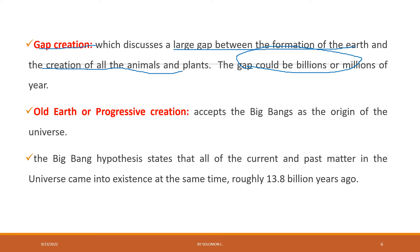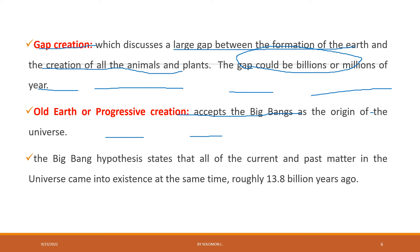The second sub-type is old earth or progressive creation. This theory accepts the Big Bang as the origin of the universe. The Big Bang hypothesis states that all current and past matter in the universe came into existence at once, roughly 13.8 billion years ago. According to this theory, all things are created by God, but were made at once 13.8 billion years ago.